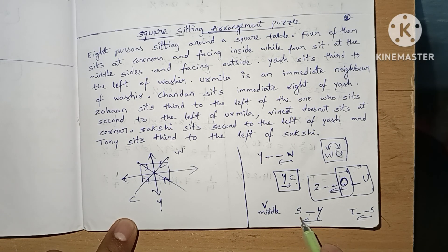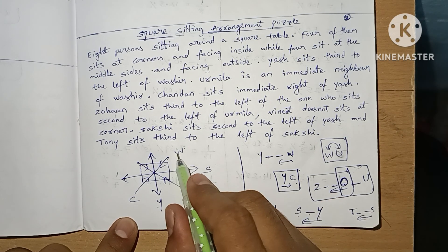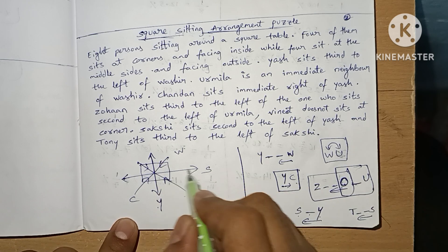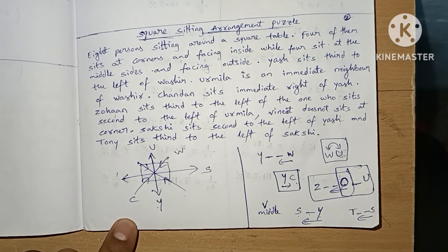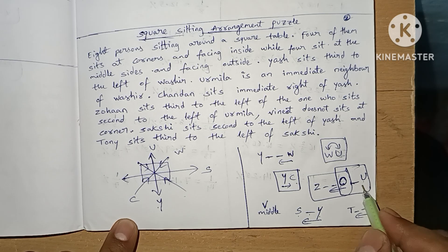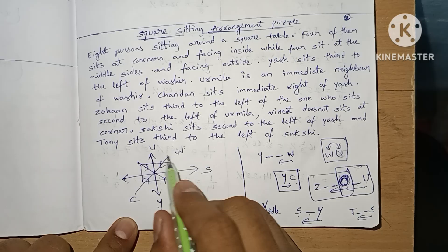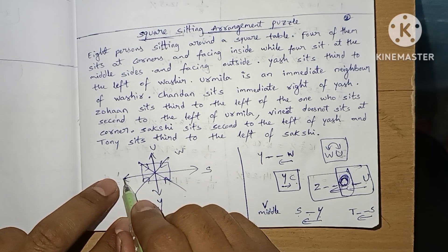Y, one person S, Y left side S. W and U are adjacent, so there is no place for U, so it is the place for U. Now U left side second person we don't know.